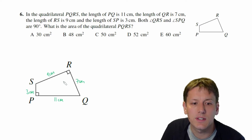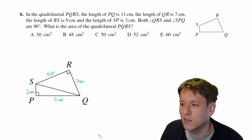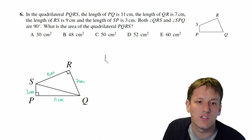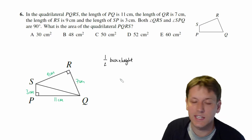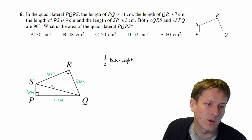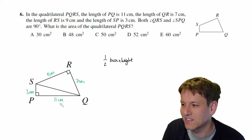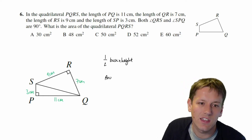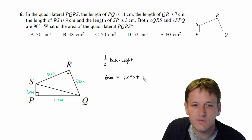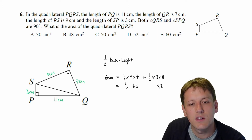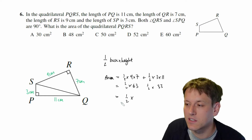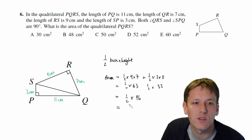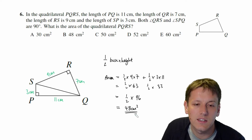These right angles are a big clue because if I draw a line SQ, I've split this shape into two triangles, and we can use the formula for the area of a triangle — a half base times height — on each of these triangles. The height has to be the perpendicular height. So the area is a half times 9 times 7 plus a half of 3 times 11. That's a half of 63 plus 33, which is a half of 96, giving us 48 centimetres squared.